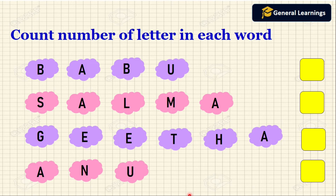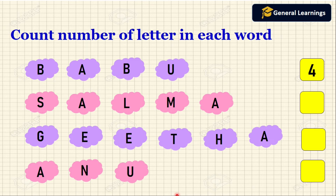Now they have told us to count the number of letters in each word. Here they have given B, A, B, U — so 1, 2, 3, 4. How many letters are present in this word? Four. So the answer will be 4.